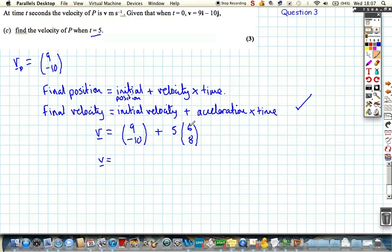9 plus 5 times 6, which gives us 39 in the i direction. And minus 10 plus 5 times 8, or 40 for the j, gives us plus 30. So if we now wanted to convert that into ij notation, 39i plus 30j meters per second, because we're dealing with a velocity here, not a position. And there we are. End of question.